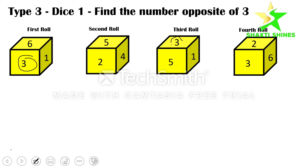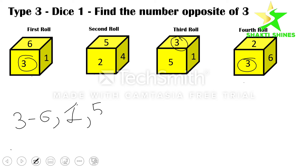Three is repeated across three rolls — it's not in the second roll, but it's in the first, third, and fourth. So except three: in the first roll we have six and one; in the third roll we have five and one — don't write one again since it's already listed; in the fourth roll we have two and six — don't write six again since it's already there. The number missing from this list is four. So three and four are opposite.